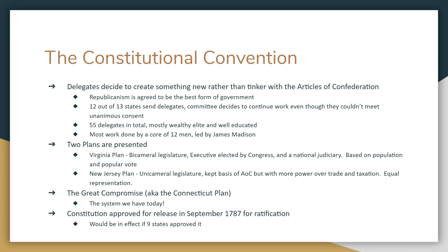The other outcome was an independent judiciary and three independent branches of government that balance each other. They also dealt with slavery — while slavery isn't specifically in the Constitution, it was decided that slavery would not be outlawed for a minimum of 20 years. That was the Great Compromise that got us to where we are today.